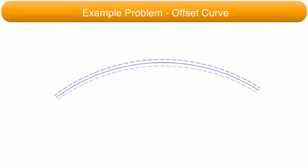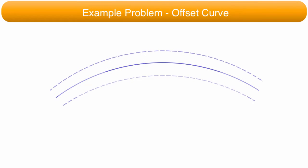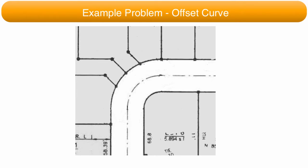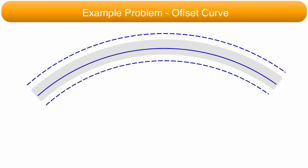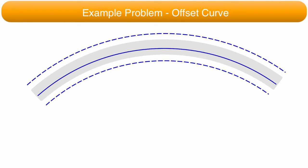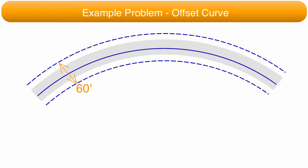Surveyors and engineers must often locate an offset curve from the center of the curve. This requirement often arises in subdivisions where the right-of-way boundaries must be located, since the offset curve is often the property boundary or a boundary to the road easement. In the example shown, the right-of-way boundary information is along a horizontal curve that is part of a highway. The parameters for these offset curves must be determined. The right-of-way width for the highway is 60 feet.